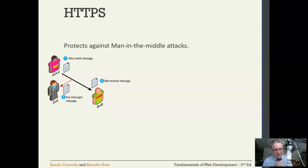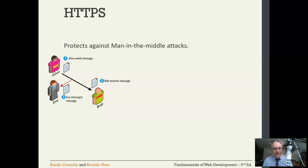In older security textbooks, the actors were always called Alice, Bob, and Eve for some reason. So Alice tries to send a message to Bob, but old mischievous Eve intercepts it. So that's what a man-in-the-middle attack is.